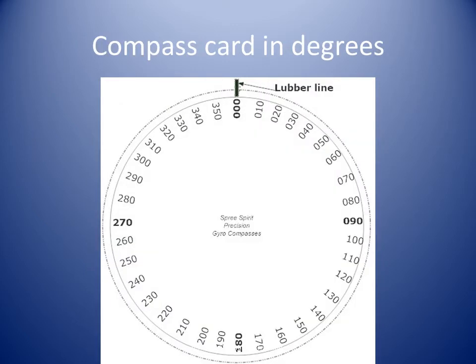Some compass cards are graduated in degrees only. There are 360 degrees in any circle, including compasses. Degrees are widely used for headings, courses and bearings of objects.